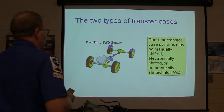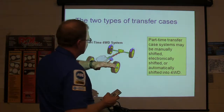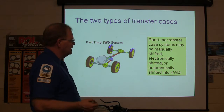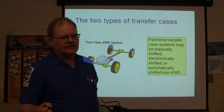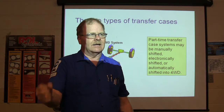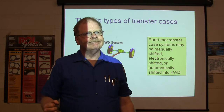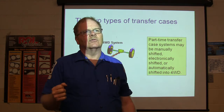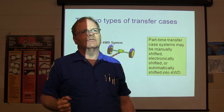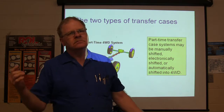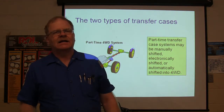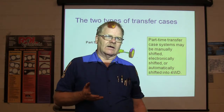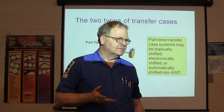A part-time transfer case system may be manually shifted, electronically shifted, or automatically shifted. The one on the Bronco has got a knob: two-wheel high, four-wheel high, four-wheel low. Simple as that. How do you get four-wheel low out of a transfer case?